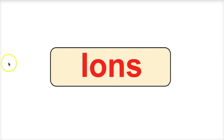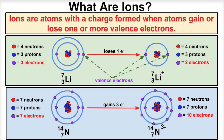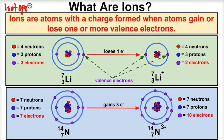Hey you guys, this is Mr. Millings and today we're going to talk about something called ions. Don't confuse ions with isotopes. In an earlier video, we learned about isotopes — how they have different numbers of neutrons inside of their nucleus. So isotopes deal with neutrons, whereas ions deal with electrons.